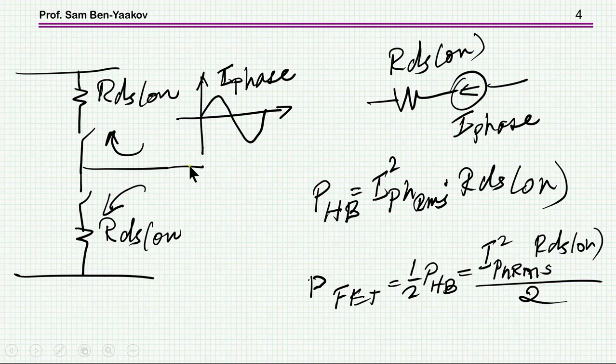Now since this is a symmetrical operation, and the transistors share the same current, one plus and minus. So therefore, the power dissipation or power loss or conduction loss of each transistor is half this value. So it is the current of the phase RMS times RDS on over two, that's it. Very simple.